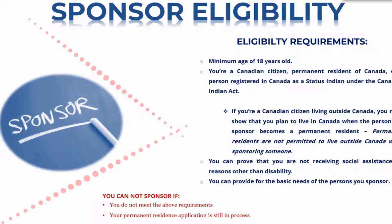You must be able to prove that you are not receiving social assistance for any reason other than disability, and that you can provide the basic needs of any person you want to sponsor. You cannot sponsor if you have a permanent resident application still processing. Some people have a PR application processing and want to sponsor somebody else — you would have to list that person on your processing PR application if eligible, or wait until you've received your PR.